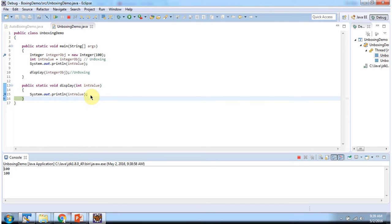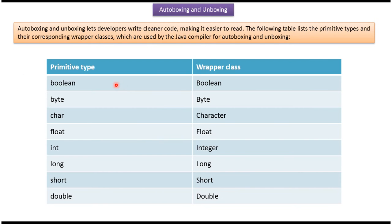In this table you can see primitive types and the corresponding wrapper classes. This is about autoboxing and unboxing. Thanks for watching.